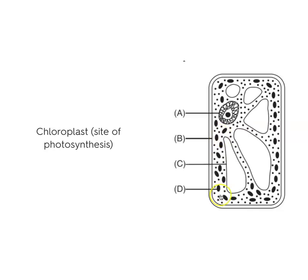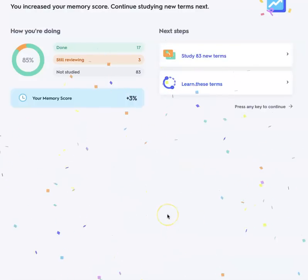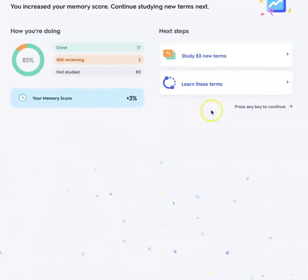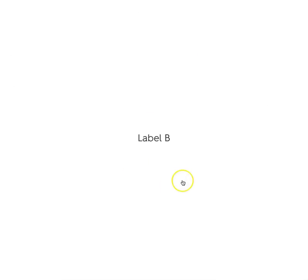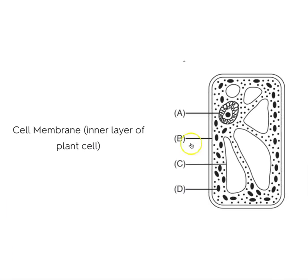Label D: D is pointing to the dark oval shapes, which are the chloroplasts, because this is a plant cell. Photosynthesis happens in the chloroplast. Label B: B is the cell membrane, the inner layer of a plant cell.